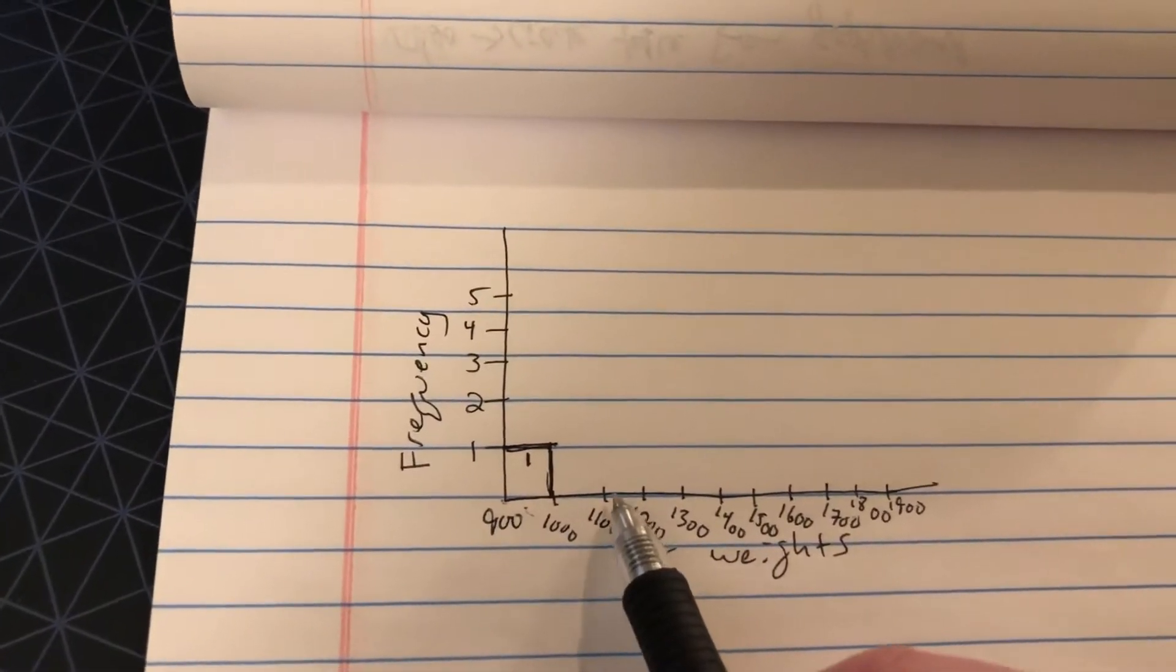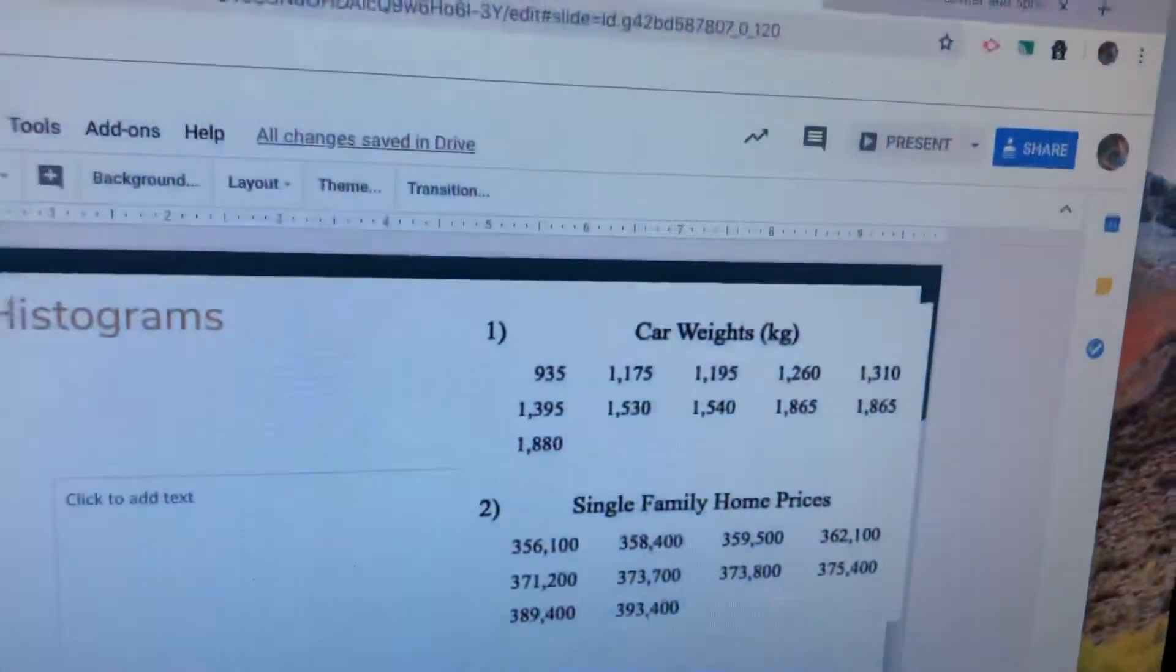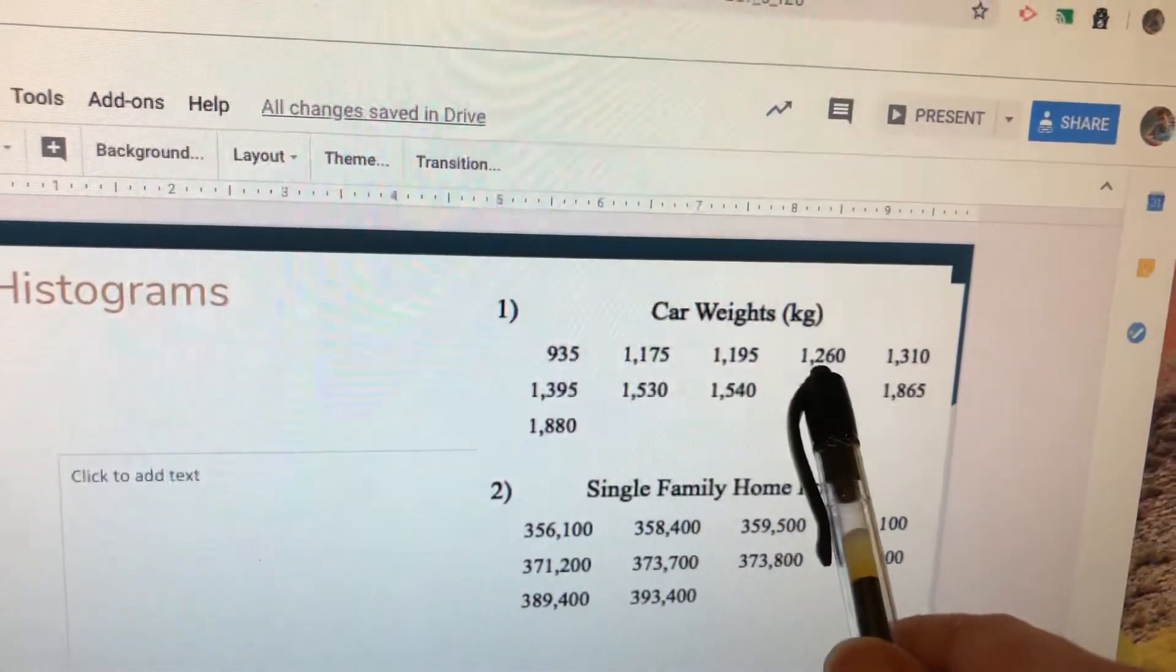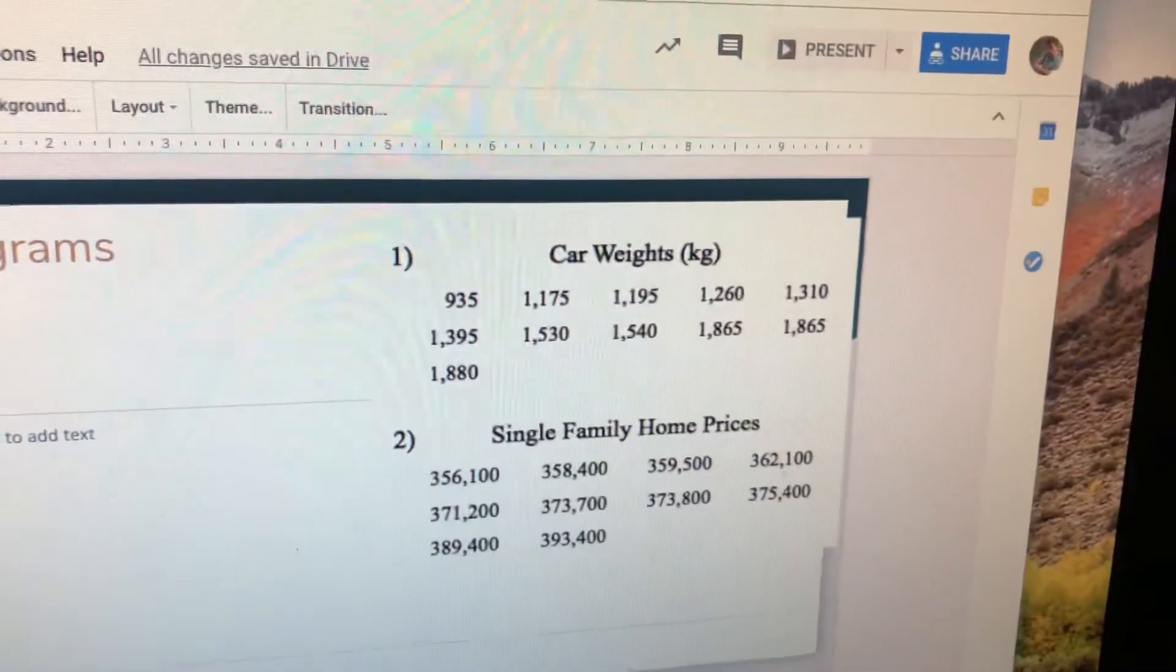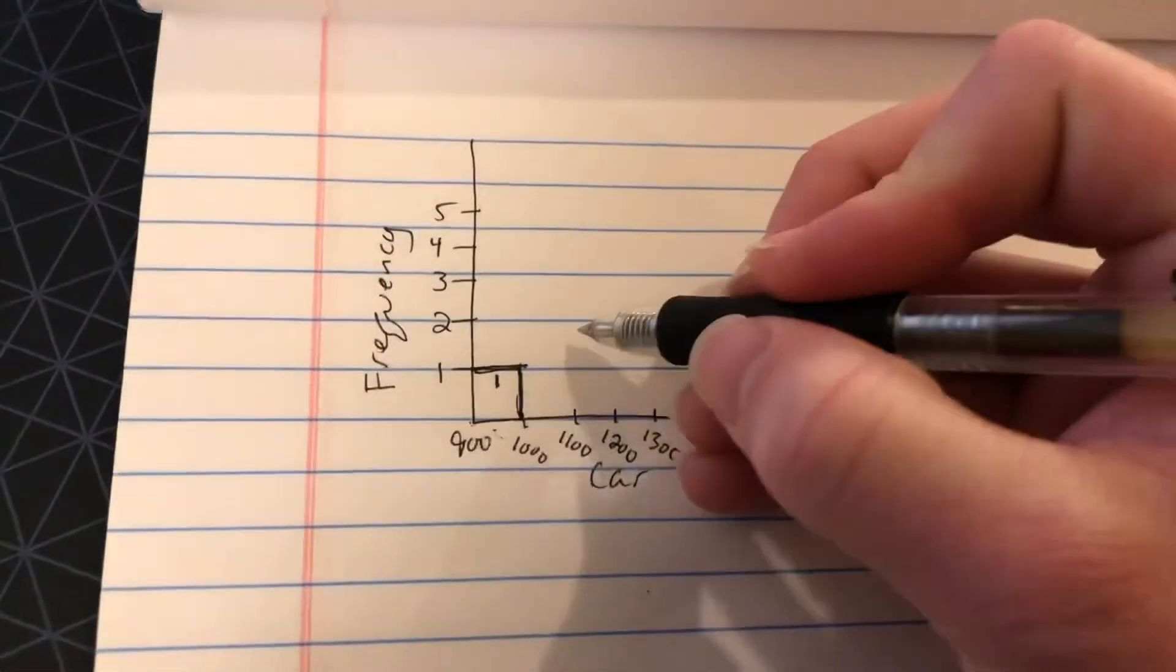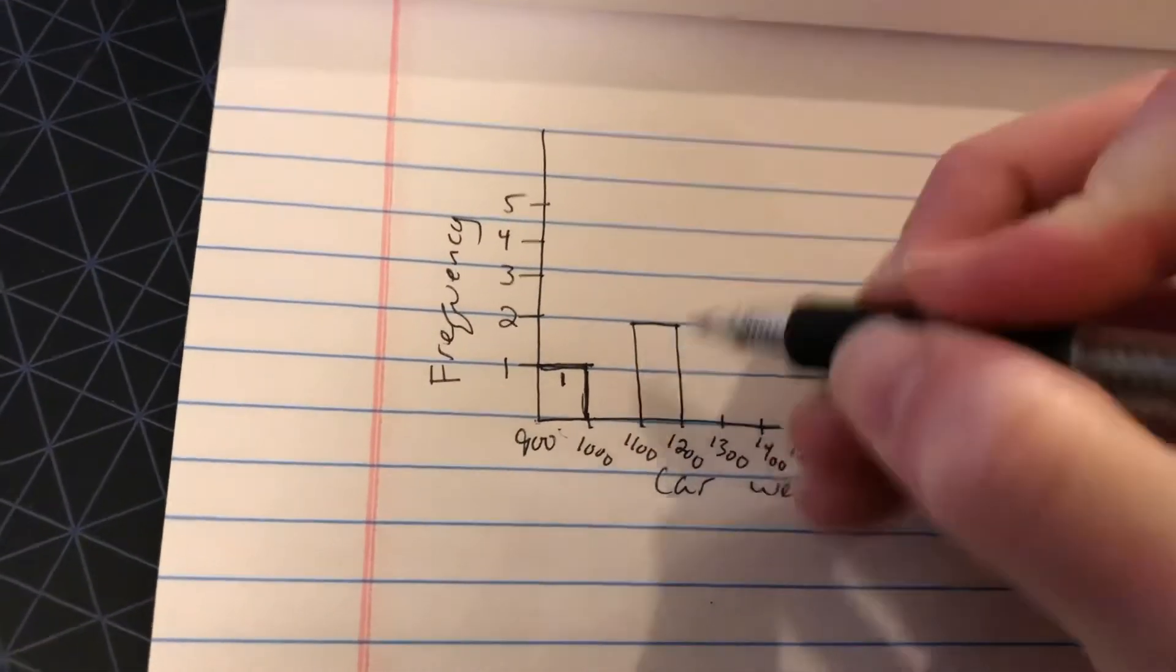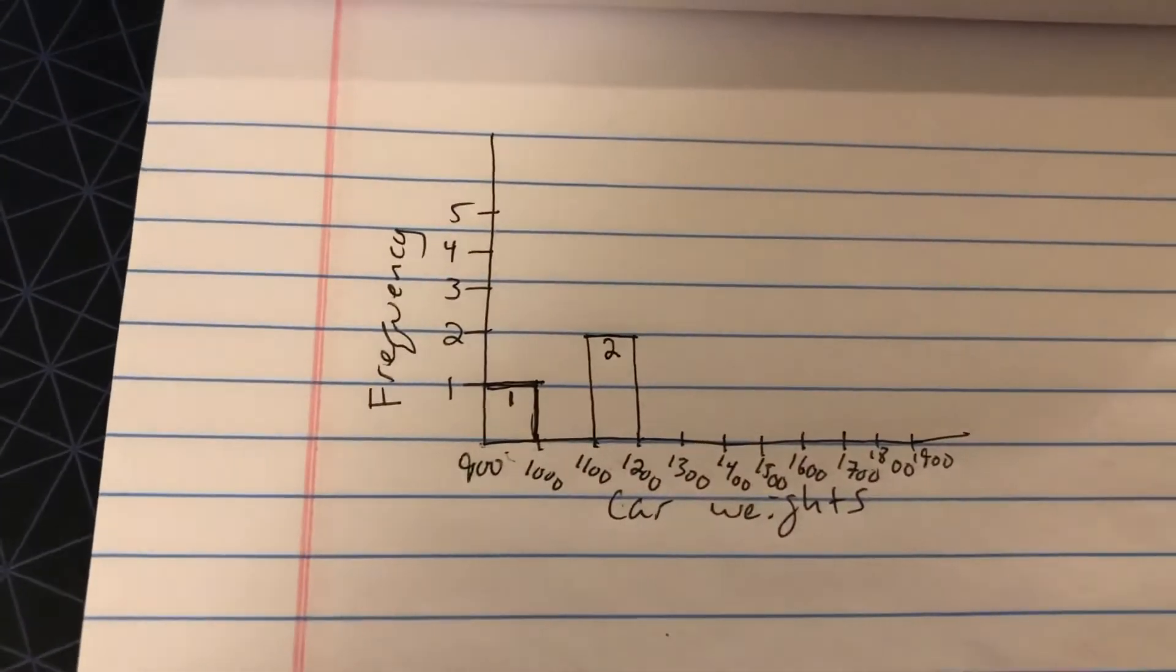My next category, 1,100 to 1,200. I see here, I have one, two options, because then that goes above. So I have two cars that are in between 1,100 and 1,200. So I'm going to come back, and I'm going to make that one go up to two. And I'm going to make the bar the entire width from 1,100 to 1,200. And there are two cars in there.